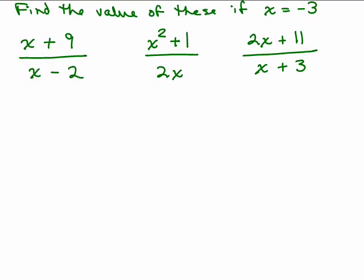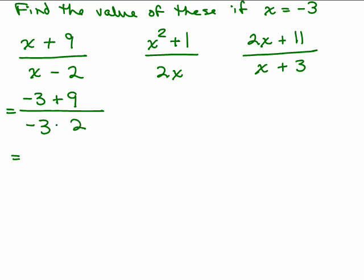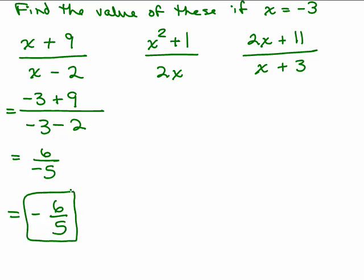All right, so we're going to plug in negative 3. For the first one, we're going to replace x with negative 3 — every place there's an x, you put in negative 3. That was a minus 2, better catch it. So that's going to be 6 over negative 5, which is just negative 6 fifths. You can leave your answer like that — it's reduced. If you want, you could write negative 1 and 1 fifth, or negative 1.2. Those are all the same.